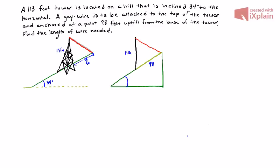One of the first things I'm going to note is that if we draw a line that's parallel to the base of the hill, remember that if we have two parallel lines, we essentially have created the same angle measure. So this angle measure is 34 degrees.